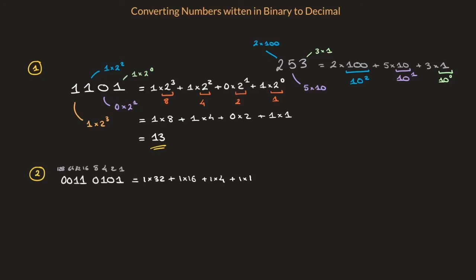So that's equal to 32 plus 16 plus 4 plus 1. And now 32 plus 16 is 48. Plus 4 is 52. Plus 1 is 53. And that's the answer.